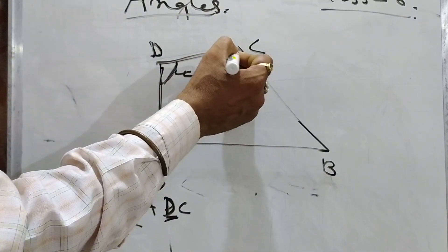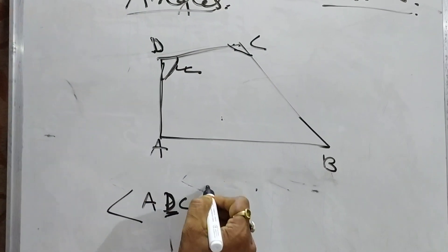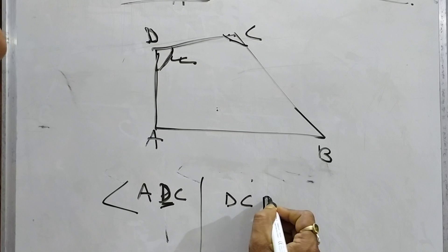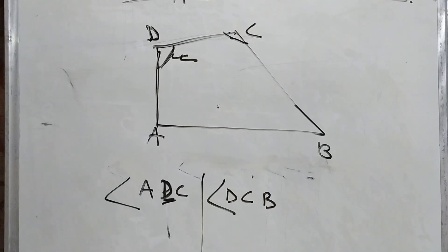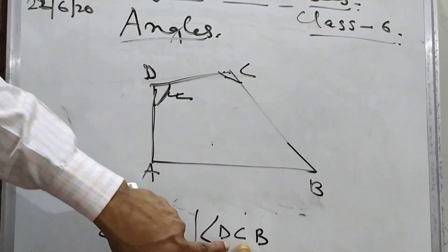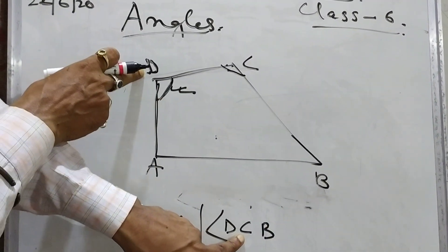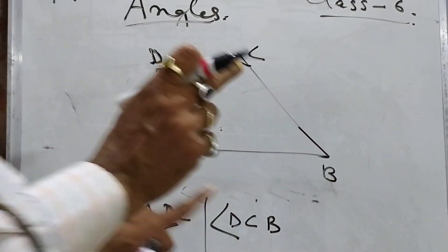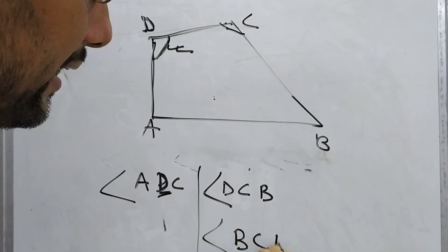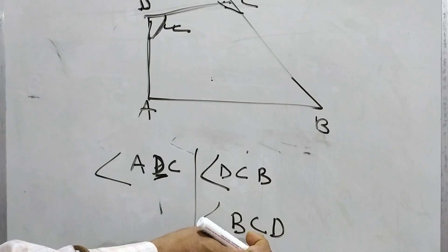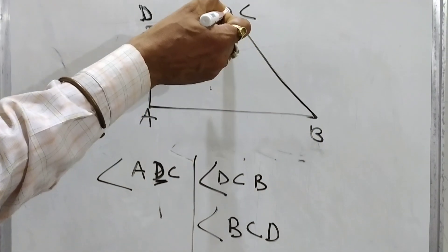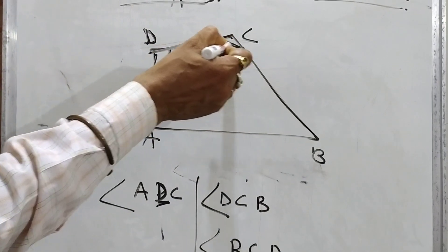Next, for this angle: I will represent it as angle DCB. C is in the middle. C is in the middle, students. DCB — the same angle I can represent as angle BCD. Here also, C is in the middle. So I can represent it as BCD, and that means this is the angle at C.